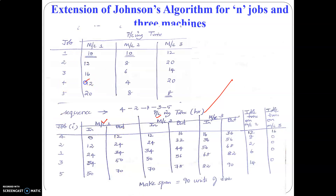Job 4 requires 12 minutes in machine 1. So it enters at the 0th minute and comes out at 0 plus 12, that is 12 minutes. At the end of the 12th minute, the next job, that is job 2, will enter machine 1. Job 2 requires 12 minutes to be processed in machine 1, so it enters at the 12th minute and exits at 12 plus 12, that is 24.